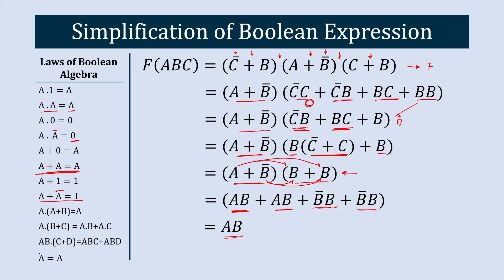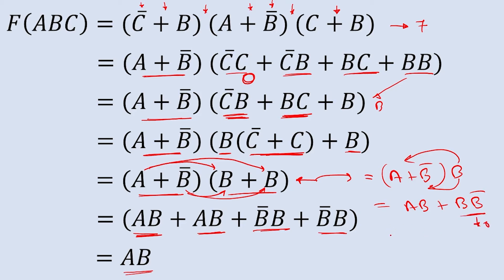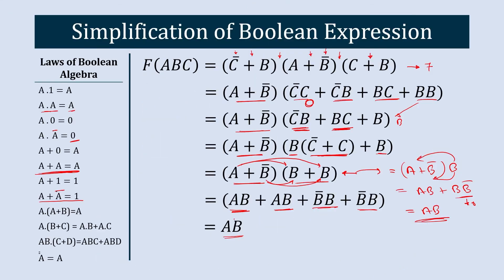Alternatively from (A plus B-bar)·B: this gives AB plus B·B-bar, and B·B-bar becomes 0, leaving AB. Both approaches yield the same result. To represent this equation we require only one AND gate, compared to seven gates before simplification — that's the impact of Boolean expression simplification.